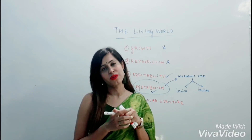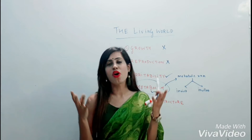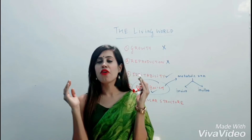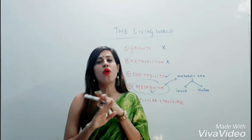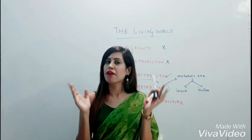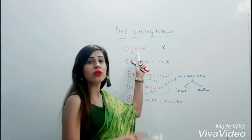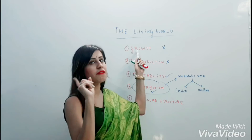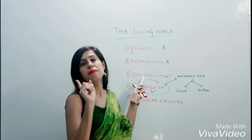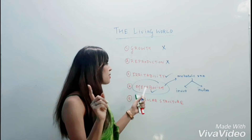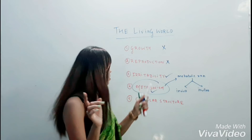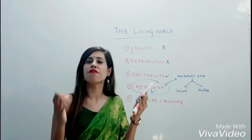Lastly, cellular structure. Cell is the building block and functional unit of life. From prokaryotes to eukaryotes, from unicellular to multicellular organisms, all bodies are made up of cells, so cellular structure is a defining feature. To sum up: growth is a non-defining feature but intrinsic growth is a defining feature; reproduction is a non-defining feature; consciousness is a defining feature but self-consciousness is not; metabolism is a defining feature but isolated metabolic reactions are not; and cellular organization is a defining feature.